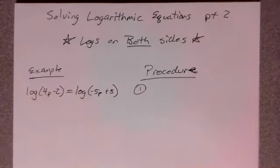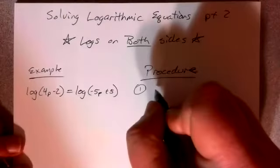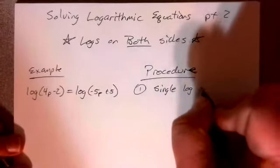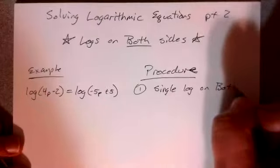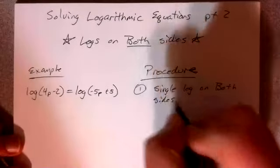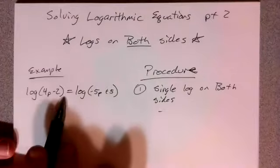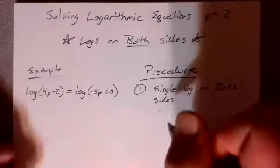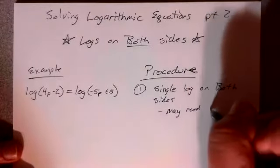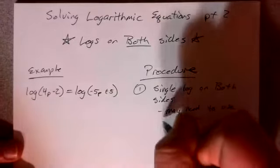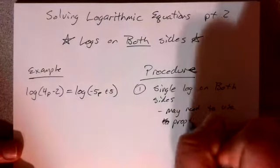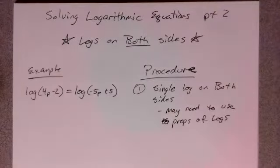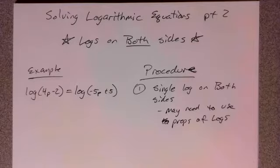Okay, so in our procedure, we want to make sure that we have a single log on both sides. In other words, here I have one logarithm on both sides of the equation. That means that sometimes we may need to use our property of logs to where we combine two to get them together. And we might see that example.